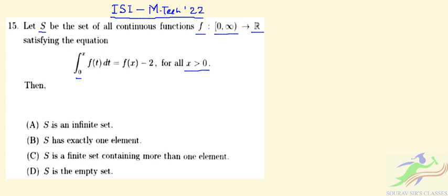Then we have to find what will be S. So from here you can simply write this: integration of 0 to x f(t)dt equals f(x) minus 2. This is already given.